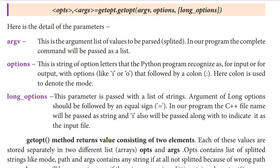Next, long_options. This parameter is passed with a list of strings. In the parameter, we mention the path of the C++ program — that is, where the C++ program is stored, we mention that path here. The argument of long option should be followed by an equal to sign. First we mention the path of the C++ file name, and at the end we mention the equal to sign. In our program, the C++ file name will be passed as a string, and i will also be passed along to indicate it as the input file. So at the end of the file name we mention the equal to sign, and at the beginning we mention i, because it is an input file — we are going to pass the C++ program as an input file.